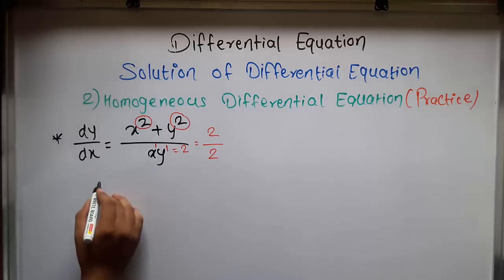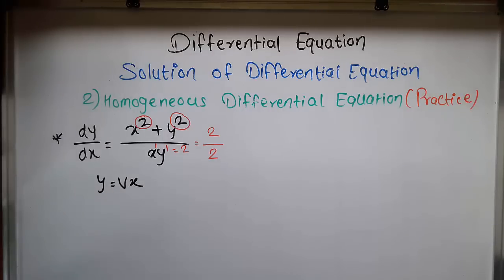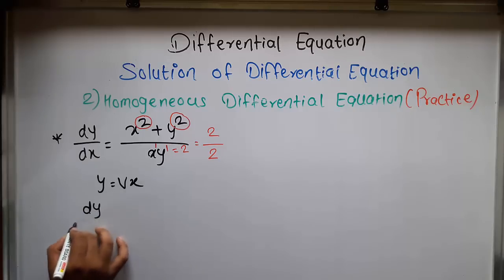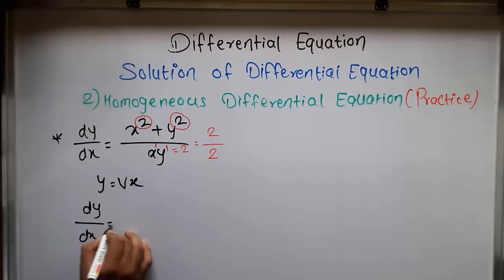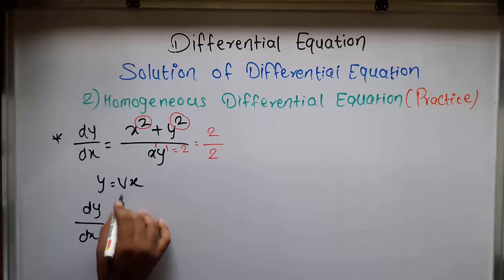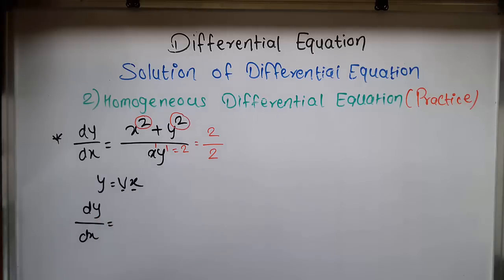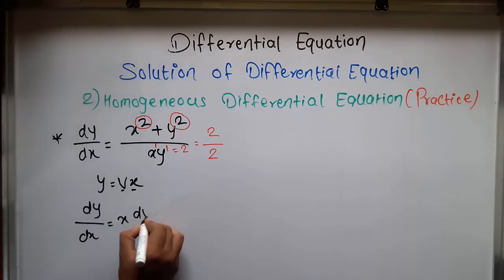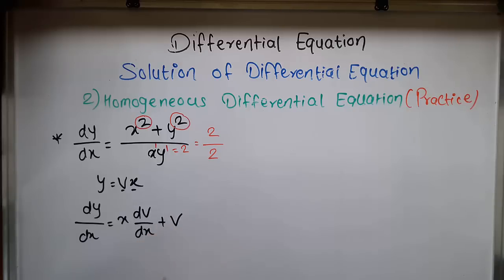To solve this equation, we put y equal to vx. Now, differentiating this, the equation becomes dy/dx equal to, since we have two variables, we use the UV rule. The UV rule gives us x dv/dx plus v.